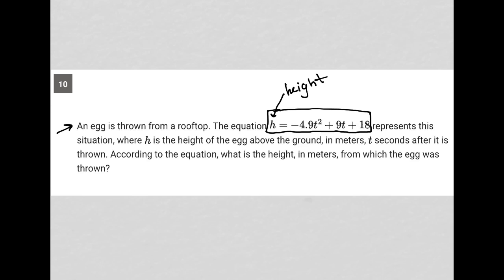If we're talking about the height from which the egg was thrown, at the point the egg was thrown, we are at T equals zero. That value tells us the height at the point of the egg being thrown. So when T is zero, this term goes to zero, this term also goes to zero, and it leaves us with 18. So the height had to have been 18 meters.